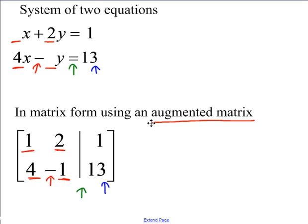So this matrix at the bottom — the 1, 2, 4, negative 1 with a vertical bar and the 1, 13 — represents this system of two equations and two unknowns. It's called an augmented matrix.